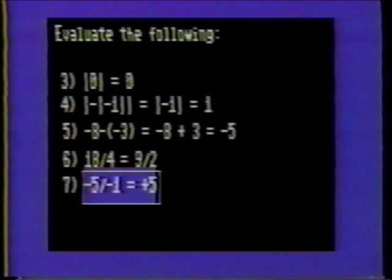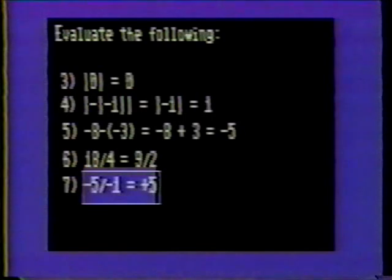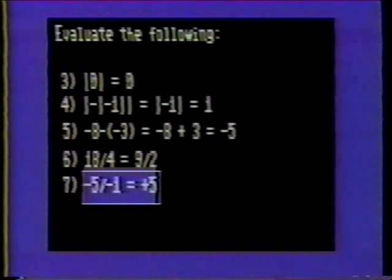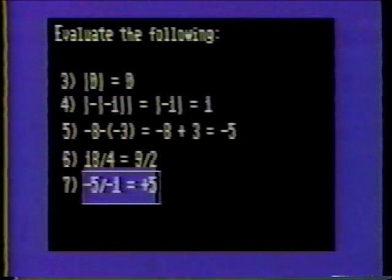Number seven: negative 5 divided by negative 1. Notice that both the numerator and the denominator are negative. Since this problem contains an even number of negative signs, the final result will be positive. Therefore, negative 5 divided by negative 1 is positive 5.